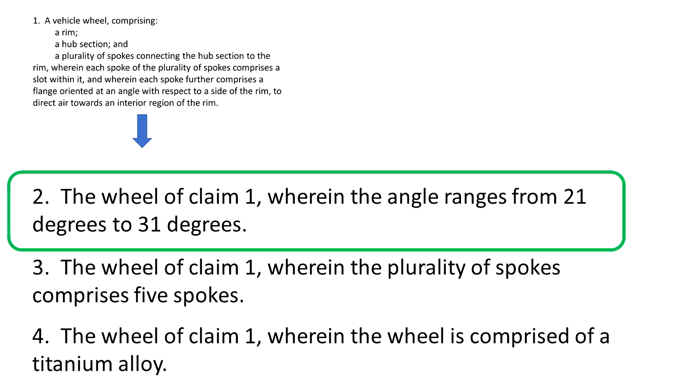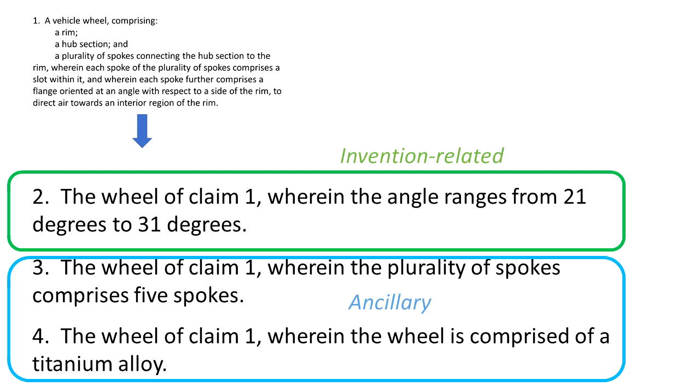Claim 2 is a further limitation of the angle of the flange. And recall, that was the main point of this invention, the flange to direct air to the brake rotors to help keep them cool. Claim 2 is directly related to our invention, whereas claims 3 and 4, while they may be valid, are ancillary. They are not necessarily bad or wrong, but they are less likely to be helpful than claim 2. So this is an important factor in deciding what should be included in our independent claims.